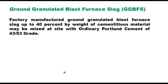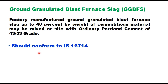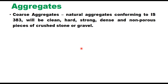If using ground granulated blast furnace slag (GGBFS), it should be factory manufactured slag and can be used up to 40 percent by weight of cementitious material. The ordinary Portland cement can be 43 or 53 grade, but GGBFS should not exceed 40 percent. This material should conform to IS 16714.